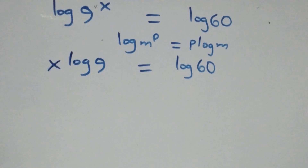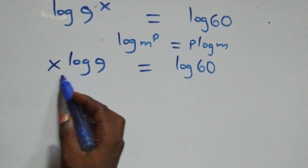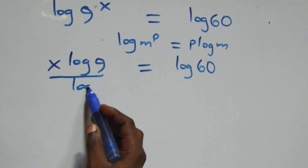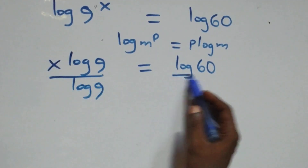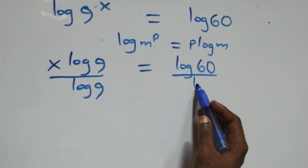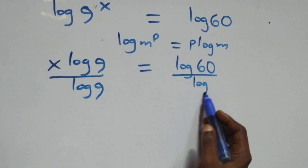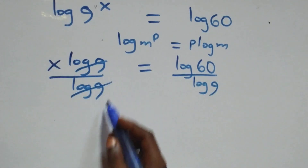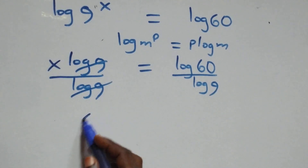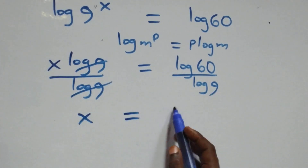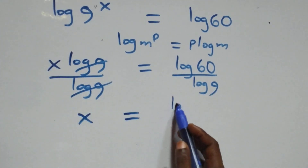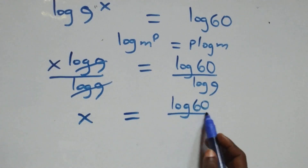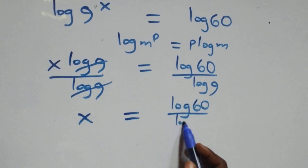Next, we divide both sides by log 9. The log 9 terms cancel on the left, leaving us with x equals log 60 over log 9.